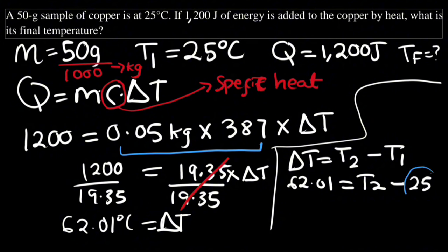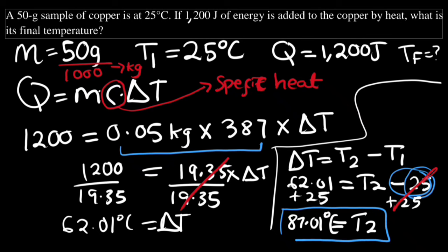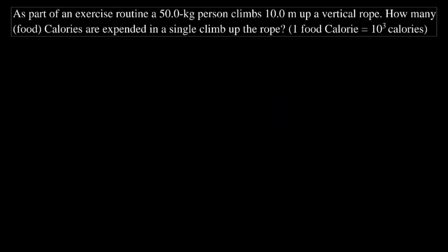We add 25 to both sides, which cancels the −25, giving us T_final = 62.01 + 25 = 87.01 degrees Celsius.